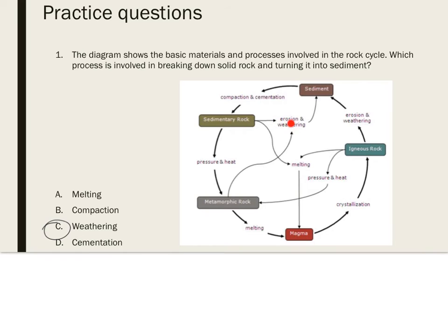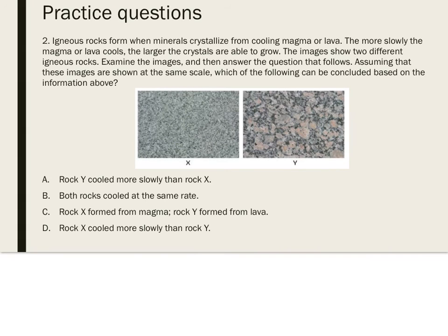Question two: igneous rocks form when minerals crystallize from cooling magma or lava. The more slowly the magma or lava cools, the larger the crystals are able to grow. Two igneous rock images X and Y are shown at the same scale — which conclusion can be drawn? Because rock Y's mineral crystals are larger than X's crystals, rock Y cooled more slowly than rock X. Since they're larger, it cooled very slowly — that matches answer A.